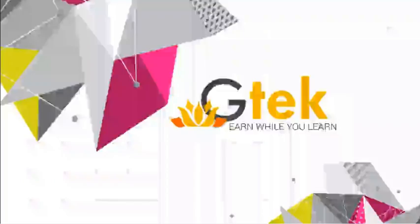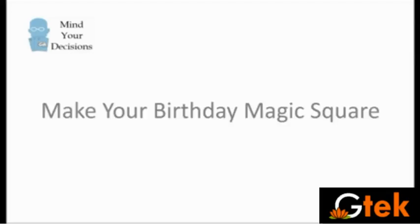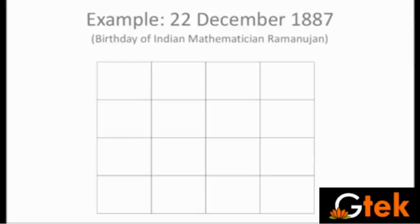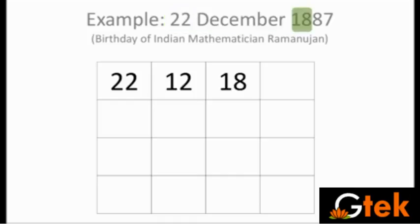Welcome to GTech. Today we are going to see about making your birthday date using a magic square. All rows, columns, and diagonals will be added so that you get one similar number. This is based on the mathematician Ramanujan, who invented this idea.